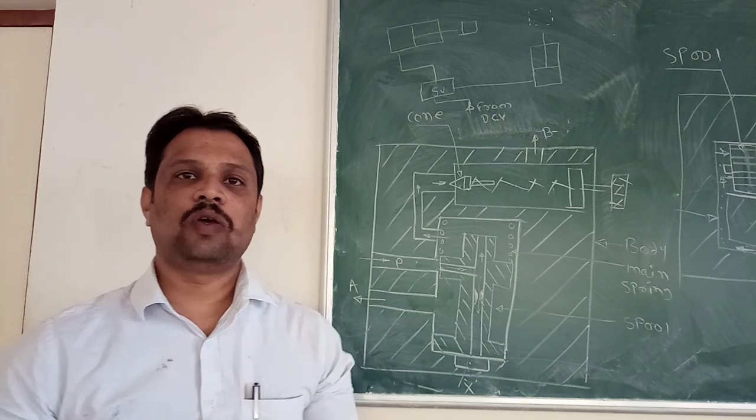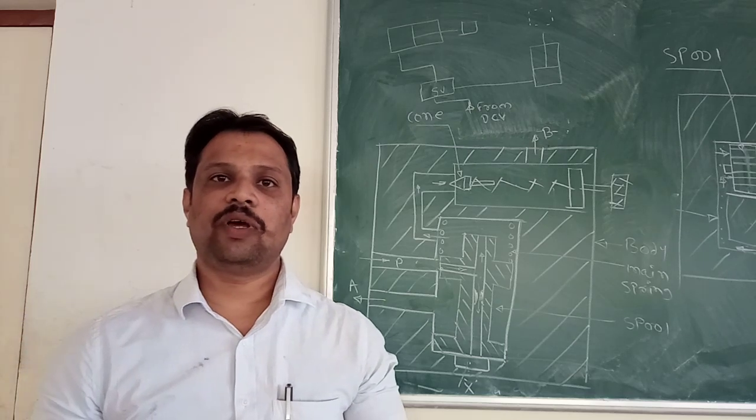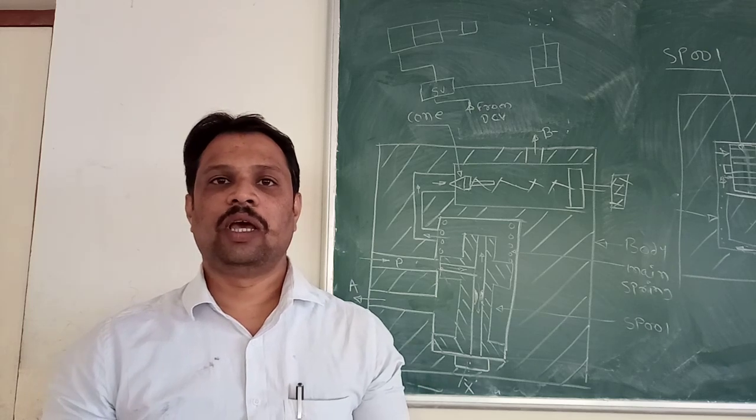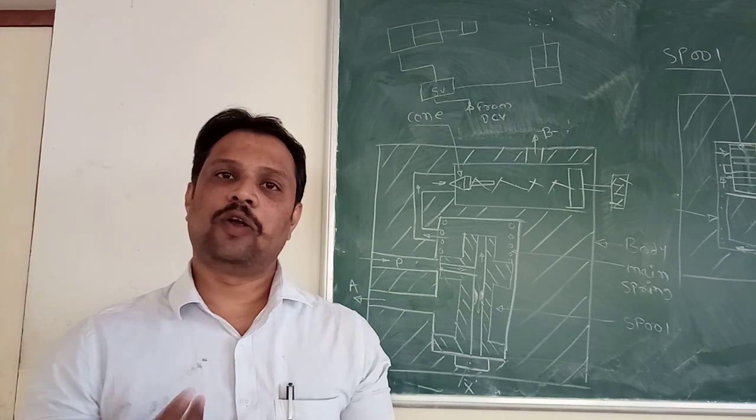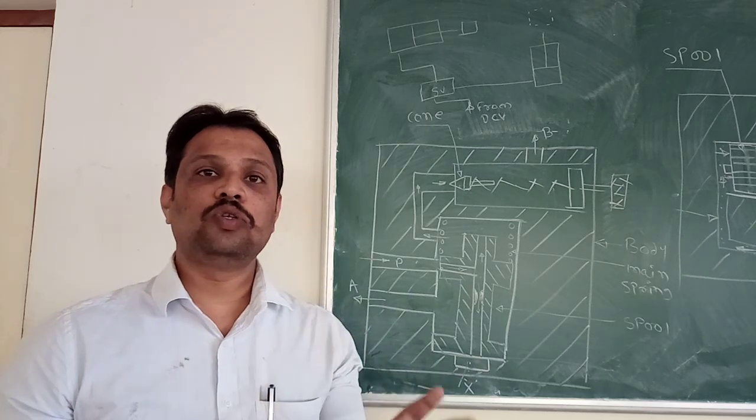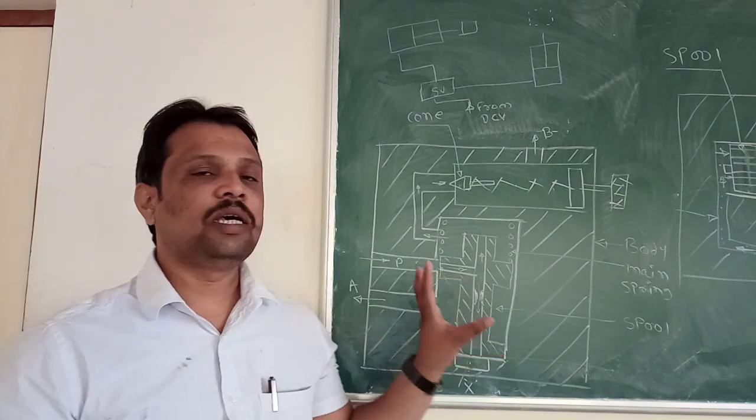In industry, you have to perform one operation after another. When one operation is complete, you have to go for the second operation. This second operation is performed automatically, and to perform this operation automatically, you have to use sequence valves.